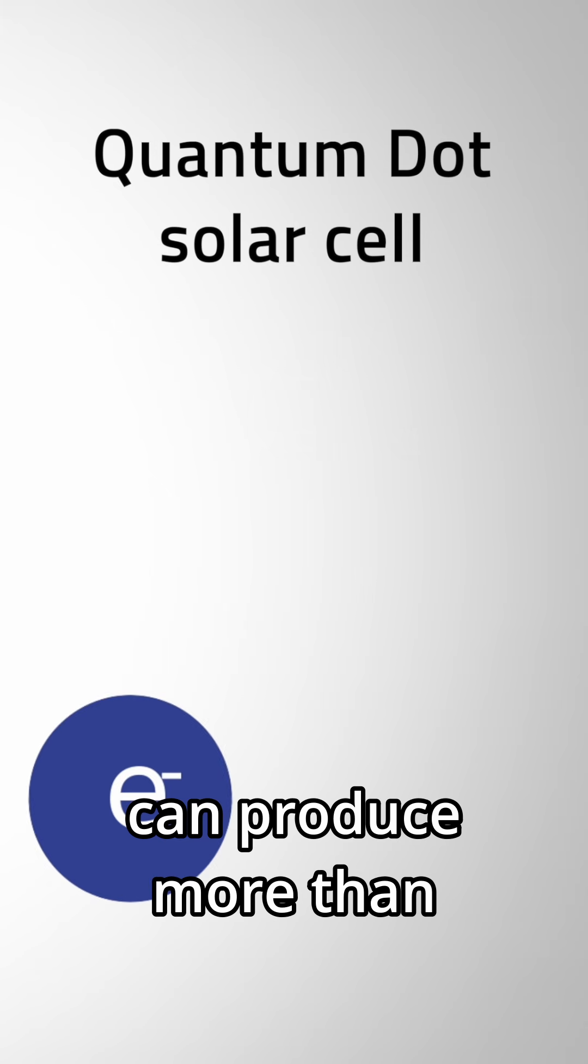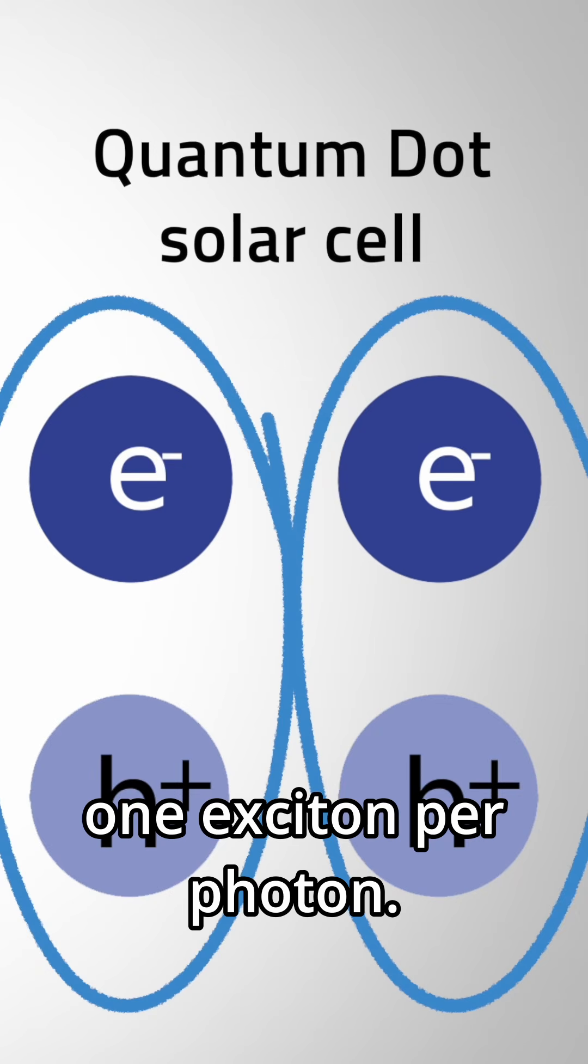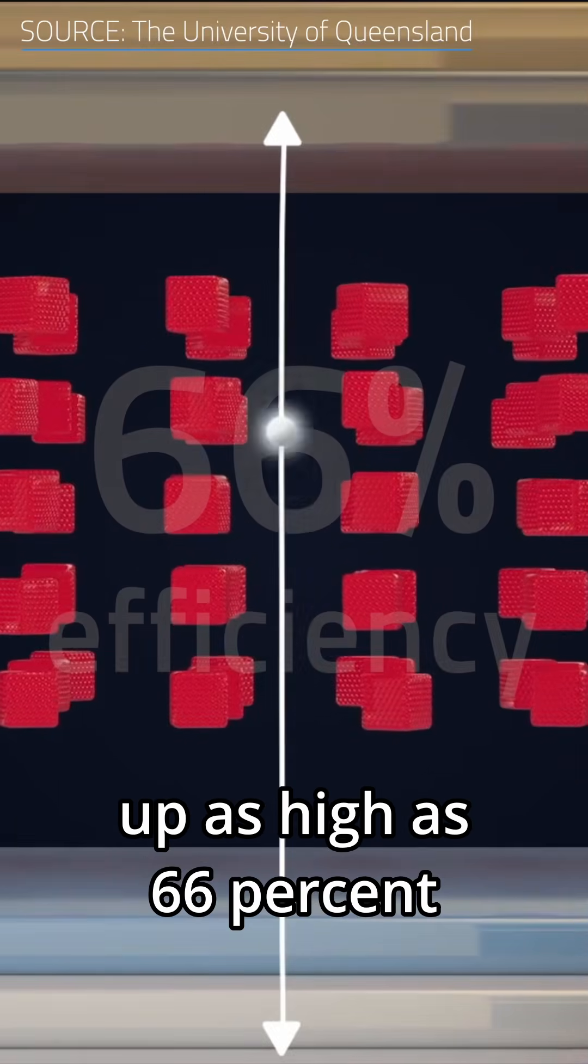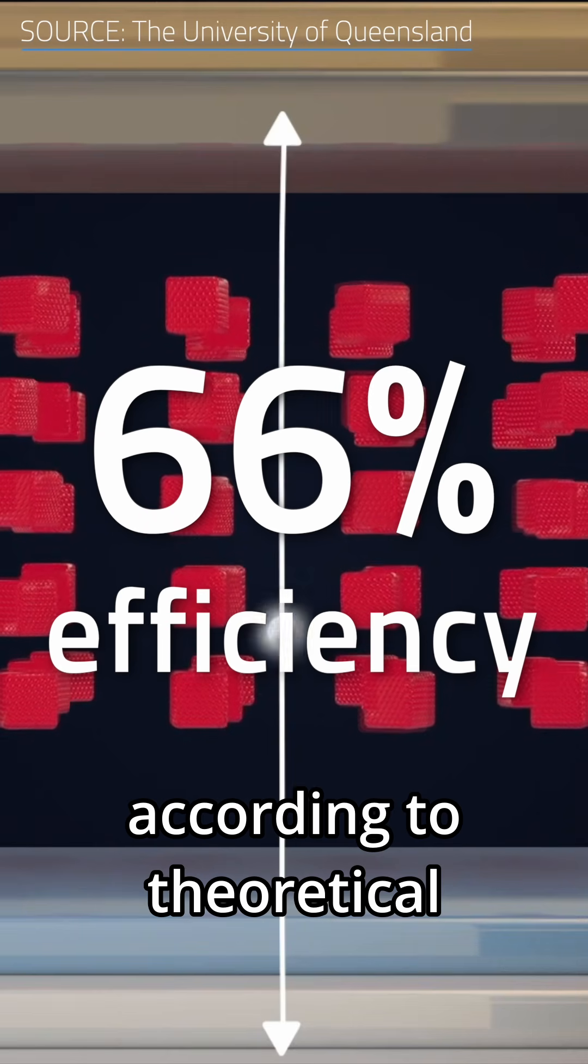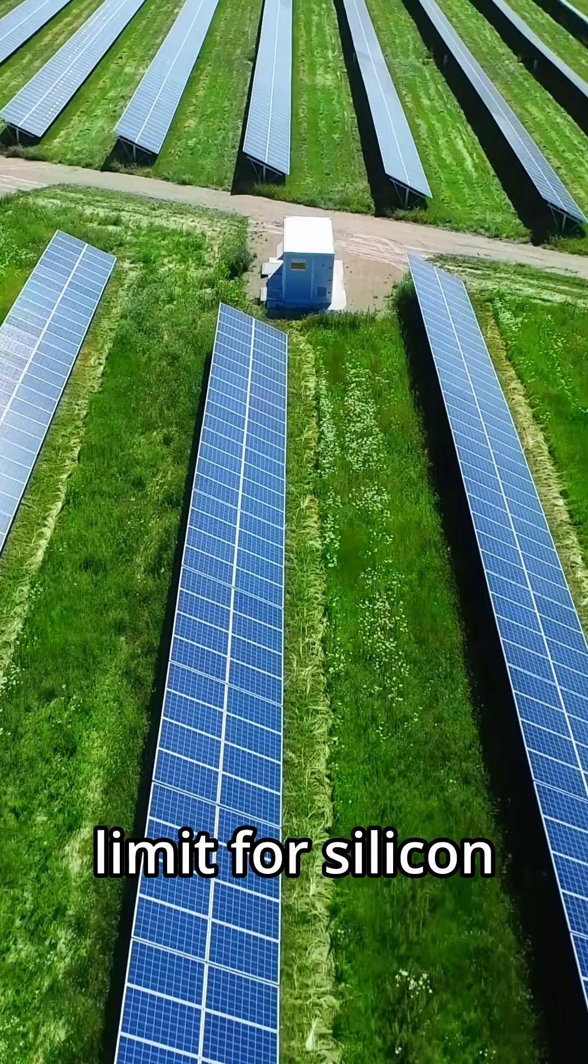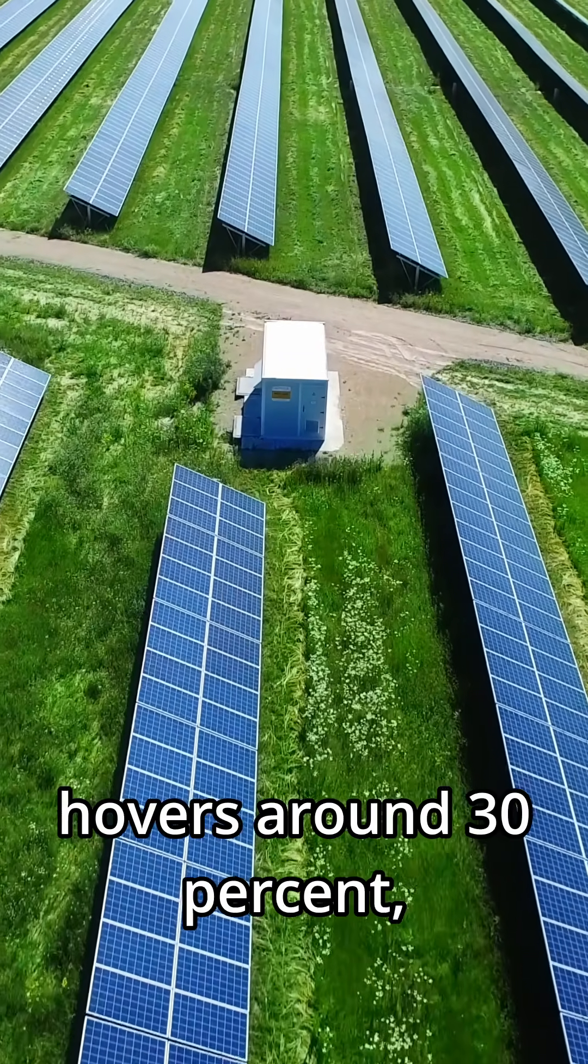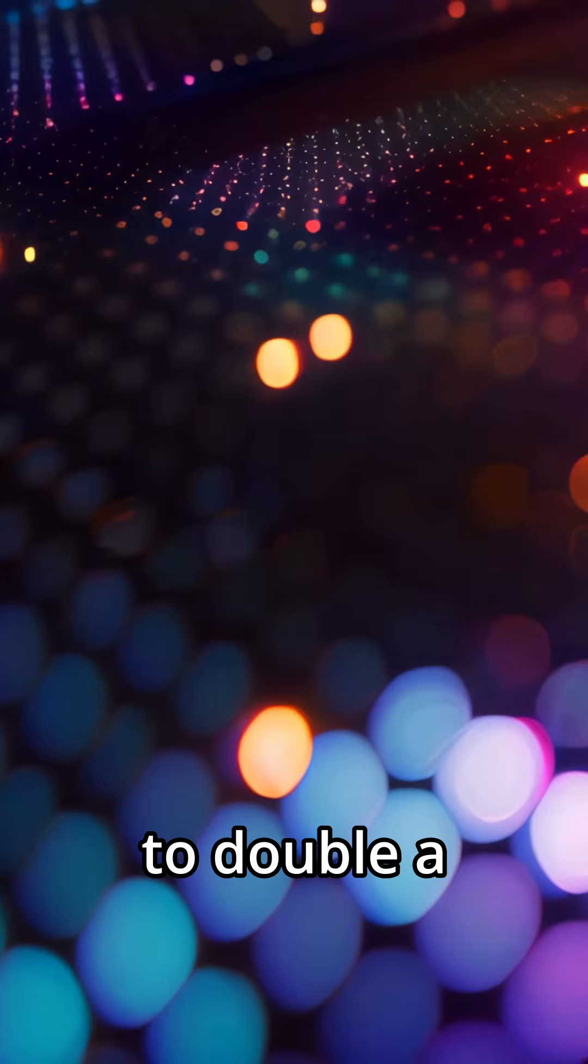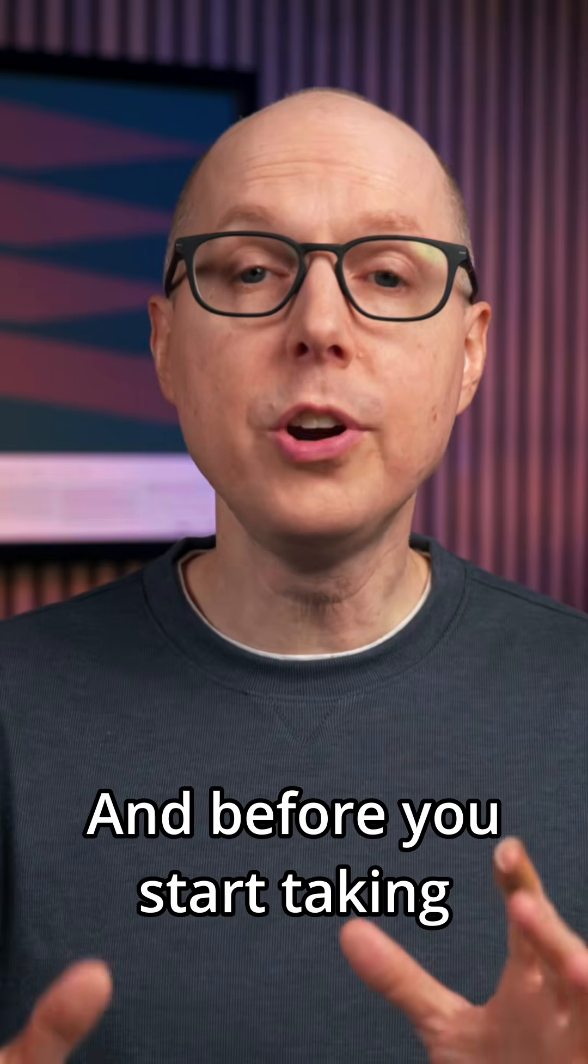Quantum dots, however, can produce more than one exciton per photon. As a result, quantum dots could push photovoltaic conversion efficiency up as high as 66% according to theoretical calculations from the US National Renewable Energy Laboratory. Considering that the typical limit for silicon solar panel efficiency hovers around 30%, these quirky dots have the potential to double a panel's performance.